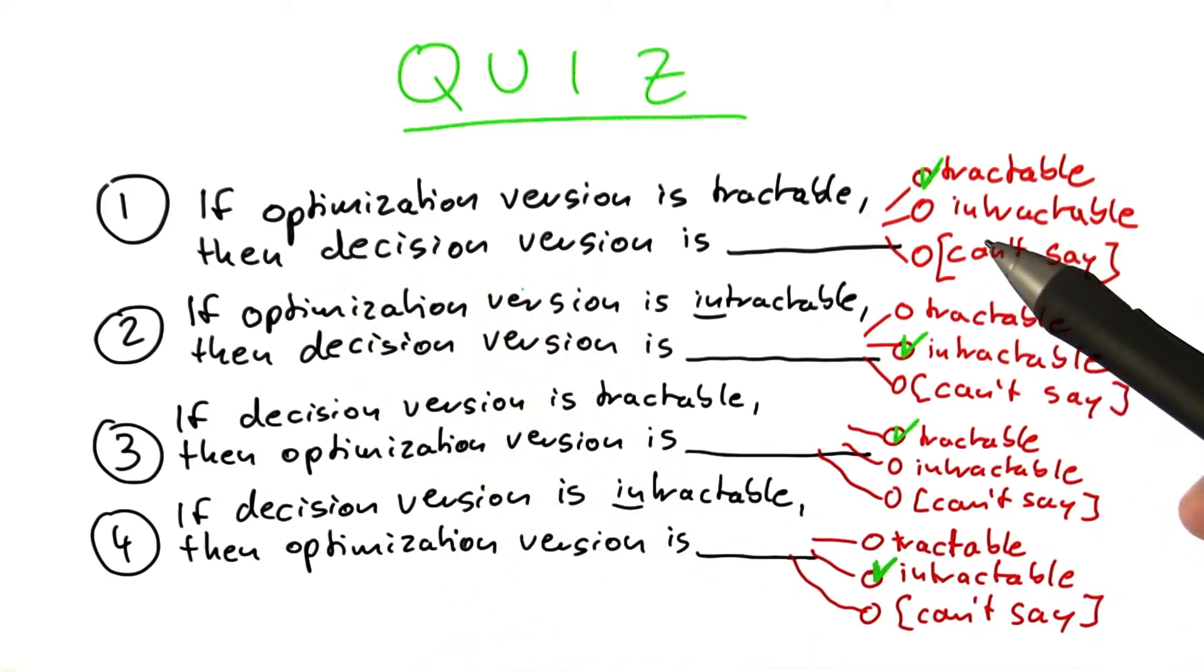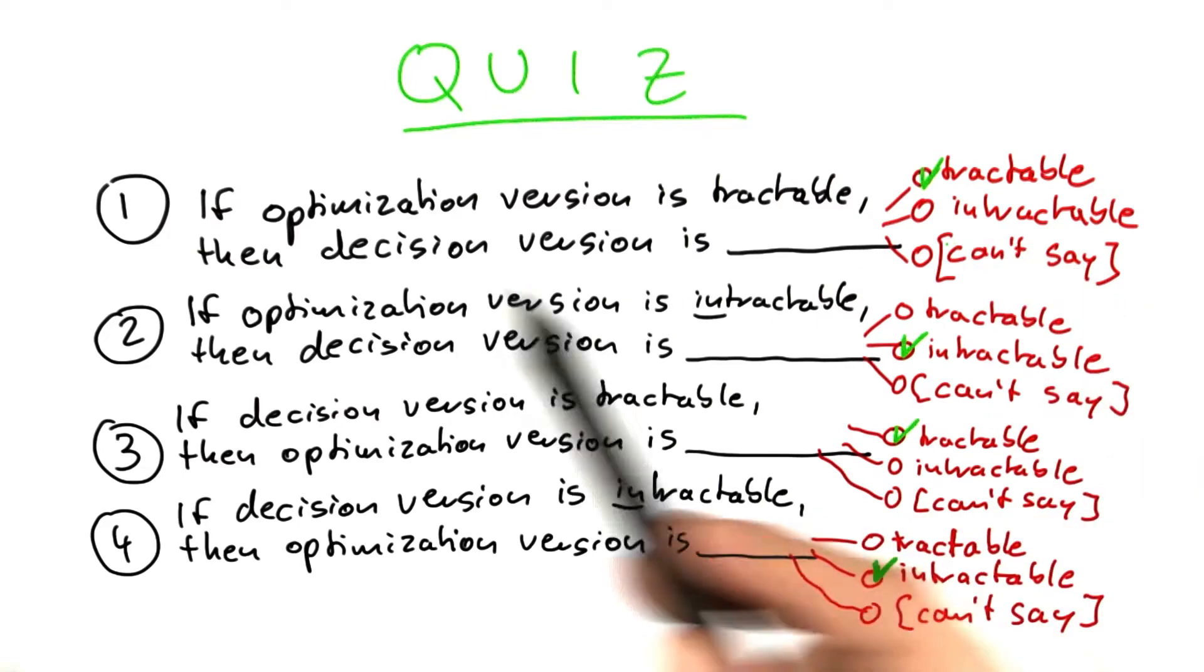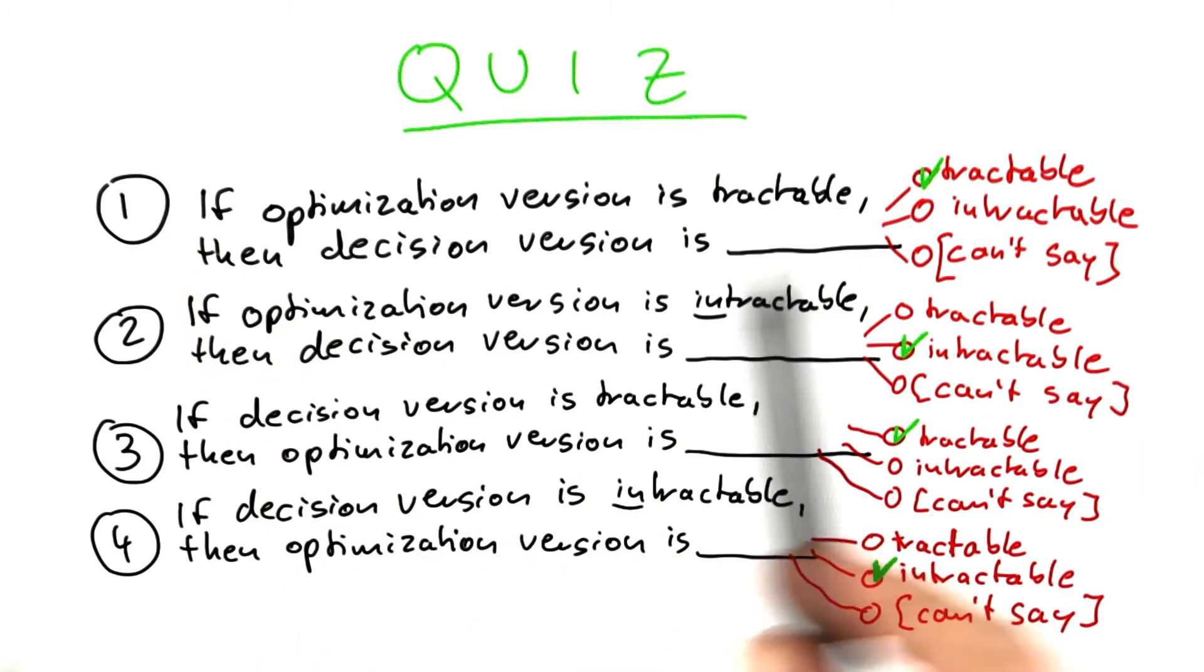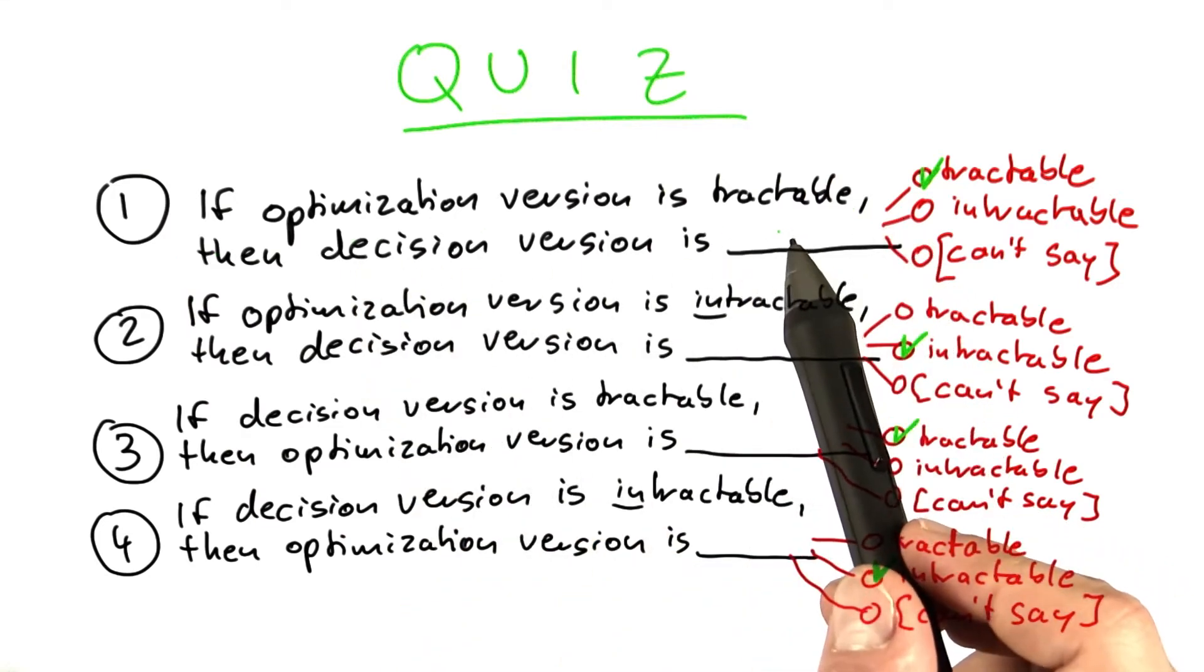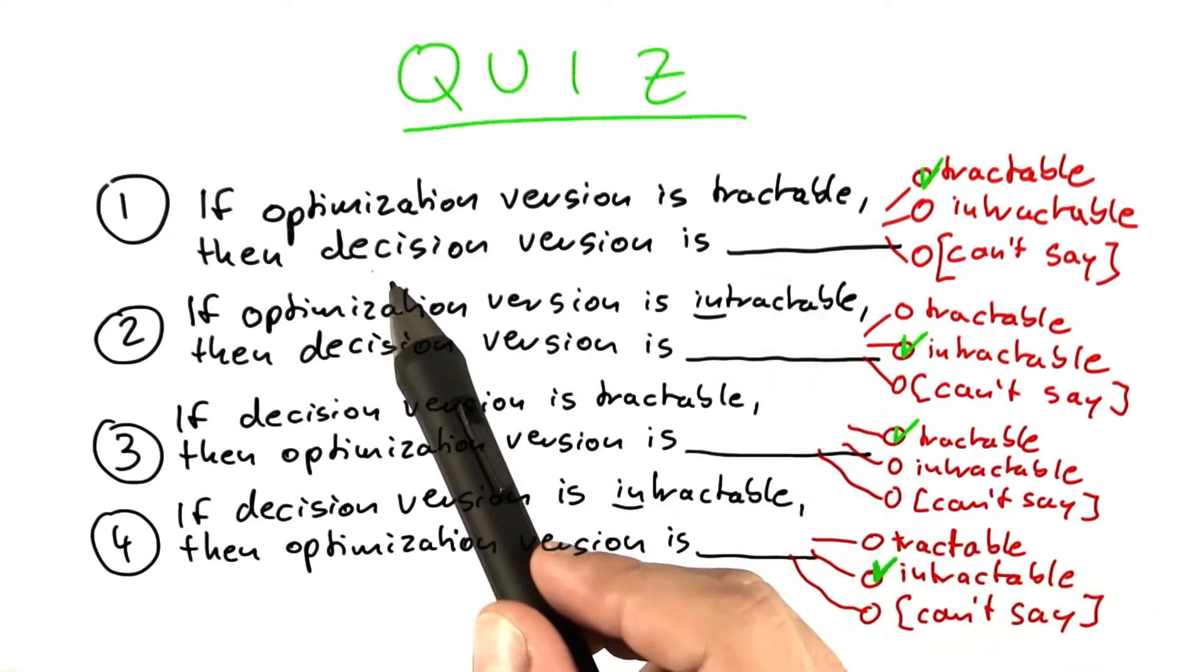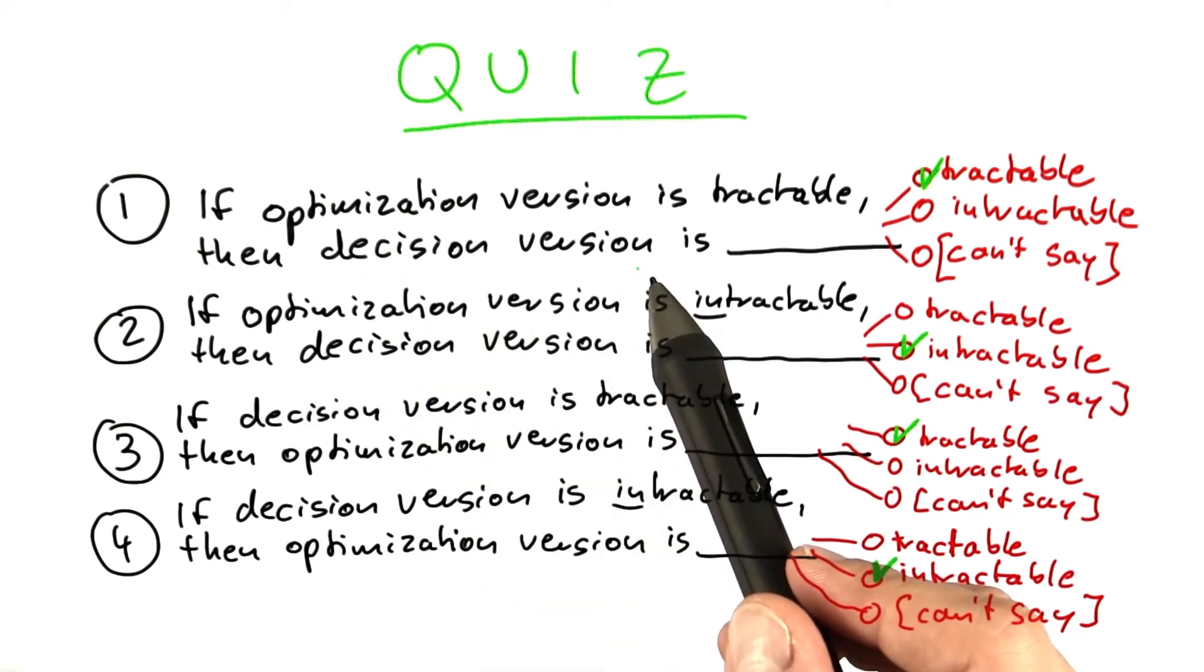Now, two of these answers are more obvious than the others. The answer to question one is rather obvious, because if the optimization version is tractable, so you can find the best possible solution in polynomial time, then with that solution, you can also very easily answer a yes or no question about the solution.